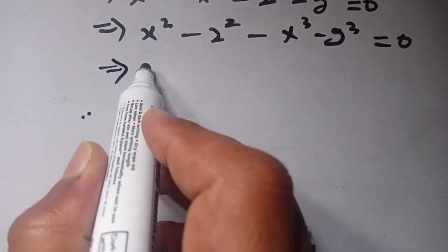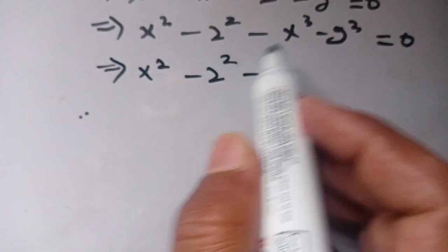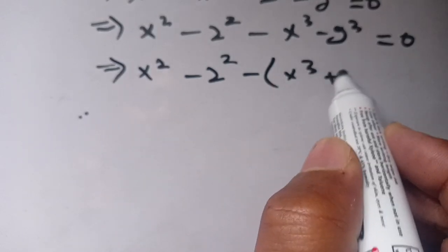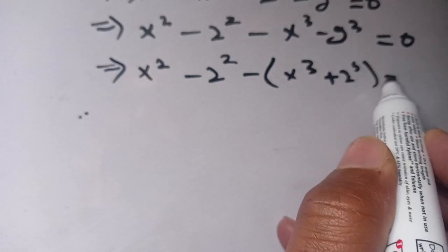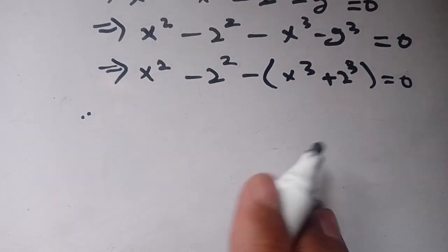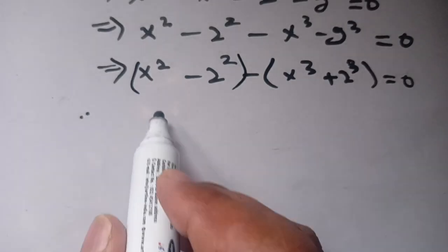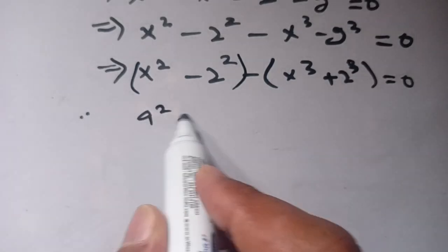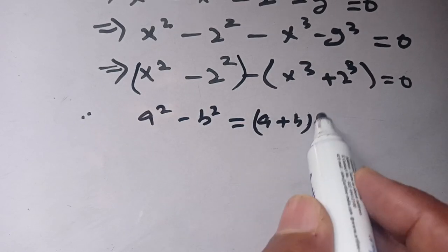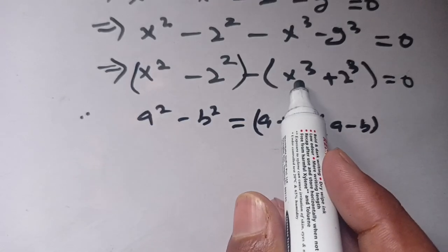In the next step, we write x squared minus 2 squared, then take out minus 1 to get minus (x cubed plus 2 cubed) is equal to 0. We can apply the identity: a squared minus b squared equals (a plus b)(a minus b). And we know that a cubed plus b cubed equals (a plus b)(a squared minus ab plus b squared).